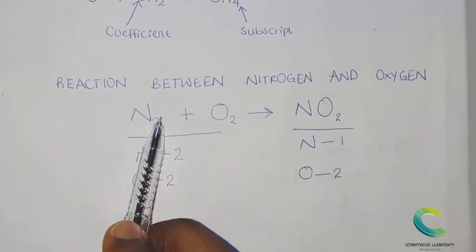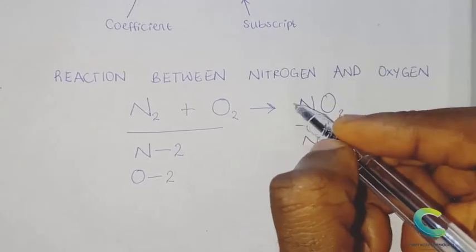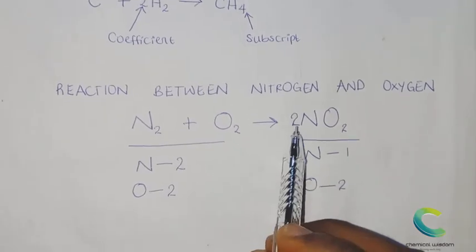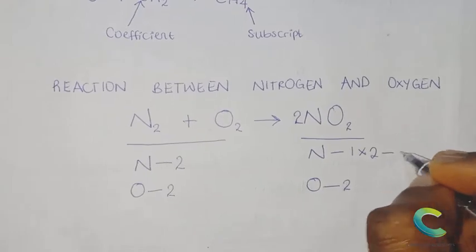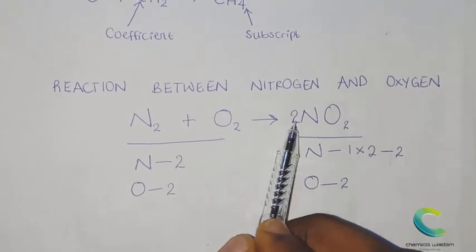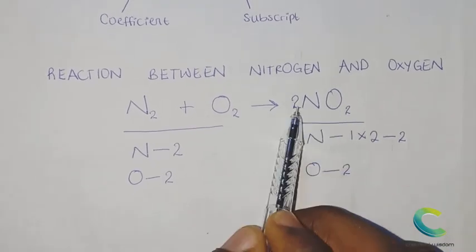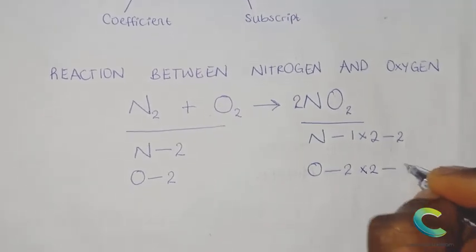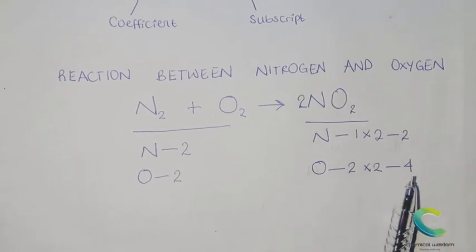Step three says manipulate the coefficients. We have two nitrogen on the left; to make it two on the right, introduce a coefficient of two in front of nitrogen dioxide. This becomes two times one for nitrogen, giving you two — so we have two on the right and two on the left. But the coefficient two also affects the oxygen, so we now have two times two, making oxygen four on the right.